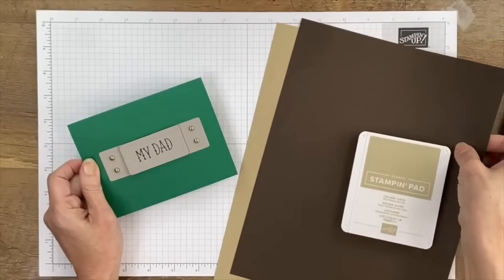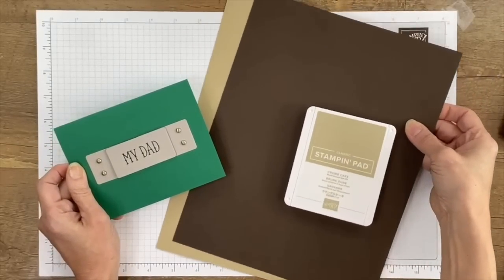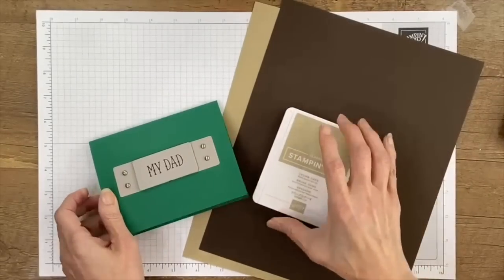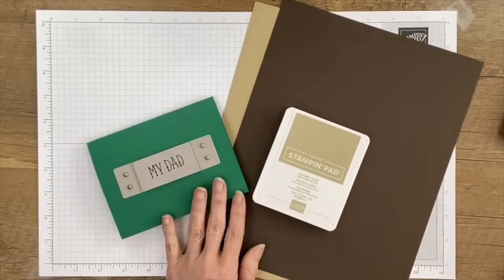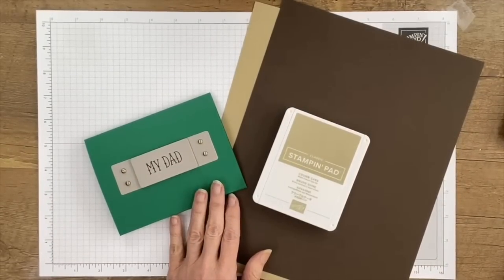The one that I'm going to demonstrate for you is going to be with Crumb Cake and Early Espresso. I just wanted to have something a little bit different than what I have here, so you can see two different versions of a finished card.